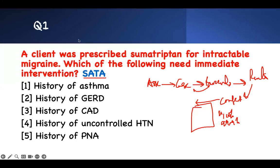What is the question? It's a SATA — select or apply — and reading backward: 'Which of the following need immediate intervention?' That means I need to intervene. The client was prescribed sumatriptan for intractable migraine. Which of these need immediate intervention? Your ask is SATA — they need immediate intervention. The case: somebody with a migraine has been prescribed sumatriptan. Rewrite it: I'm taking sumatriptan and I need to intervene. There's a contraindication somewhere that requires immediate intervention — that is what the question is asking.